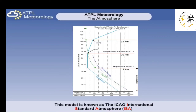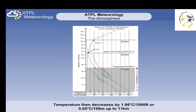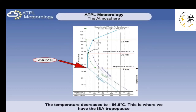However, the model only extends to 32 kilometers, which is about 105,000 feet above mean sea level. ISA assumes that at mean sea level the temperature is 15 degrees Celsius, pressure is 1013.2 hectopascals, and the density is 1225 grams per cubic meter. From the surface up to 36,090 feet, or 11 kilometers, the temperature decreases at a constant rate of 1.98 degrees Celsius per 1,000 feet, or 0.65 degrees Celsius per 100 meters. The temperature decreases down to minus 56.5 degrees Celsius. This is where we find the tropopause in ISA, and the temperature no longer decreases with altitude.